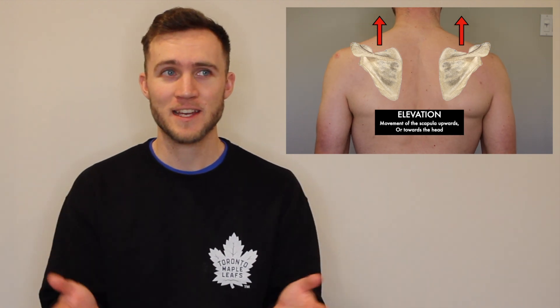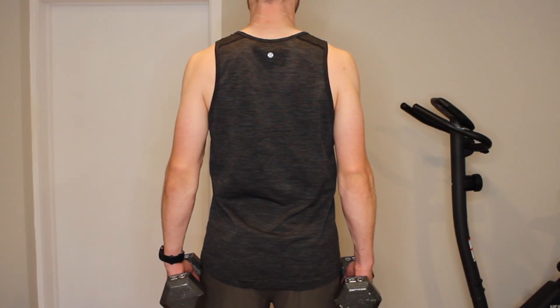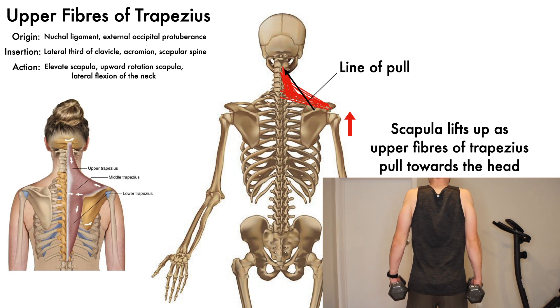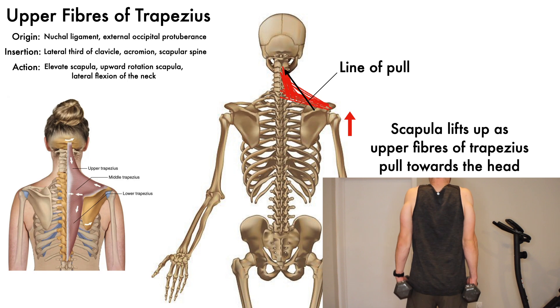This isn't exactly going to blow any minds out there. Scapular elevation is essentially the movement of shrugging the shoulders upwards and bringing the scapula up towards the head. So of course, an exercise that targets this movement and the muscles of the upper fibers of trapezius would be the shrug. It's a very simple exercise that focuses on activating the upper fibers of trapezius as we lift the shoulders up while our arms remain by our sides.